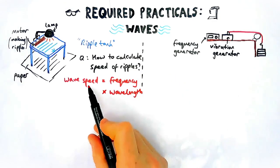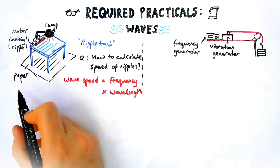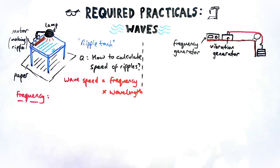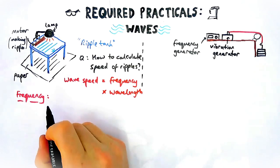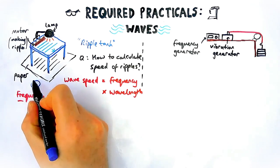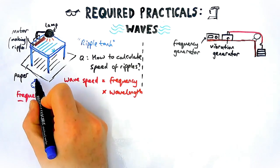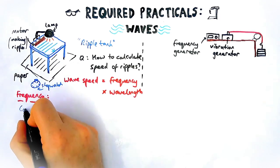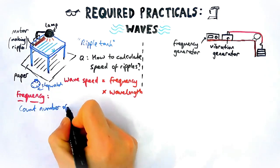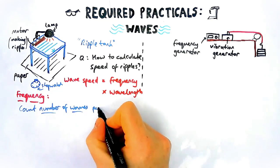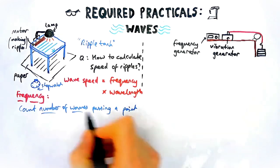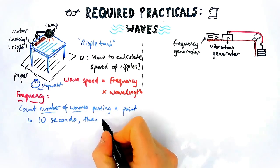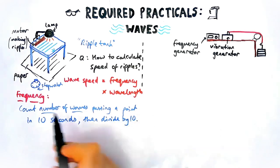We're going to talk about frequency first. Frequency is the number of waves passing a point per second. So how do we go about doing that? We'll need a stopwatch because we need to know time to get the second element of our frequency. One person will have a stopwatch and one person will be counting. We're going to count the number of waves passing a point not in one second, but in let's say 10 seconds. It doesn't have to be 10, but it needs to be a lot bigger than 1. Then we're going to divide that number by 10 to find out how many waves there are in one second. It helps with accuracy. So that's frequency.